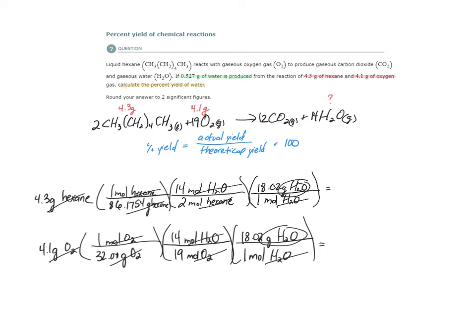4.3, open parentheses, 1 over 86.1754, 14 over 2, 18.02 over 1. I get a mass of 6.29 grams of water. For oxygen, it's 4.1, open parentheses, 1 over 32, close, 14 over 19, close, 18.02 divided by 1, close parentheses, get 1.70 grams of water.